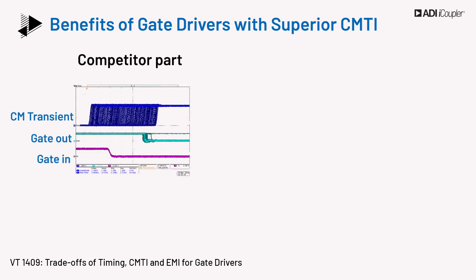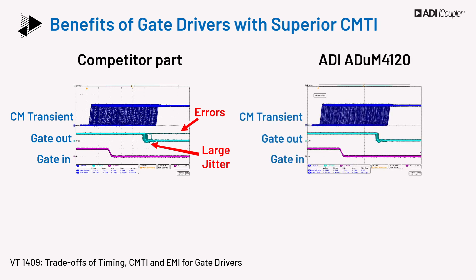Let's look at an example shown here. The competitor part shows various error signatures at large and fast transients. Using such a part in the system may not be suitable in a SiC or GaN system which has fast transients. In fairness, the failure signature is obtained above the rated CMTI of the part as per datasheet. In comparison, the ADI part is able to reliably operate without any glitch at the same transient level as the competitor part. The transients shown in the figure are at a spec higher than quoted in the datasheet.